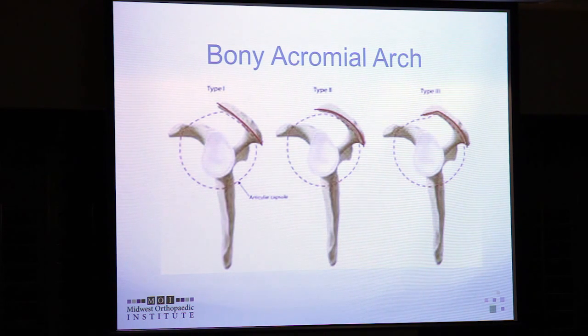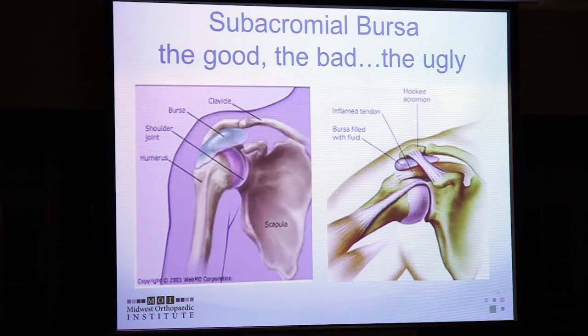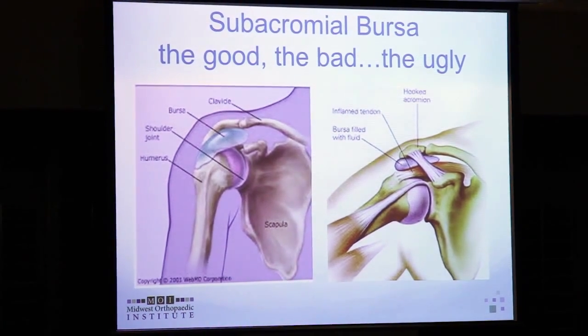We also think about extrinsic factors that cause wear, like bony anatomy. You'll see reports that say a patient has a type 1 acromion — a flat acromion where the outlet for the supraspinatus tendon is wide open. The most narrow outlet is the type 3, which has a hook that can be acquired with spurring associated with age and wear, or can be congenital. Around the shoulder, the bursa is a padding situated between the muscle and the overlying bony acromion, providing a cushion as we move our arm.